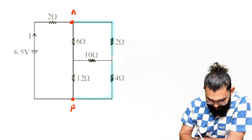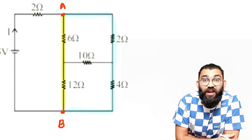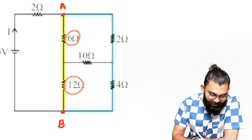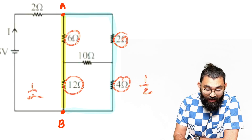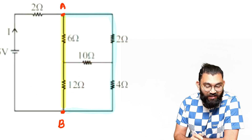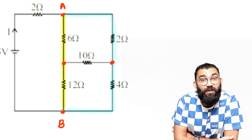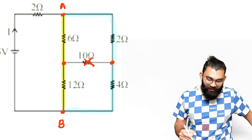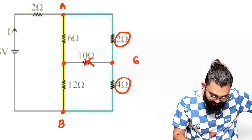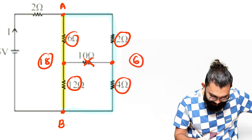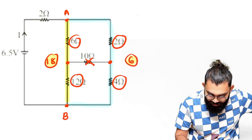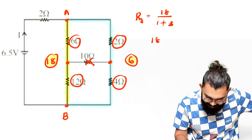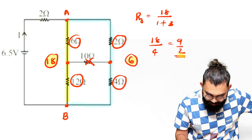The 6 ohm and 12 ohm resistances are also connected between A and B — this is again a Wheatstone bridge. The ratio 6 divided by 12 is 1/2, and 2 divided by 4 is also 1/2, so this is a balanced Wheatstone bridge. The 10 ohm resistor is the bridge resistor; the potential difference across it is zero and no current passes through it, so you can remove it. Now 2 ohm and 4 ohm in series give 6 ohm, and 6 ohm and 12 ohm in series give 18 ohm. Eighteen and 6 are in parallel: 18 divided by (1 + 18/6) = 18 divided by 4 = 9/2 ohm.